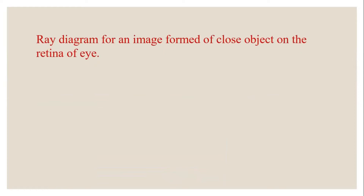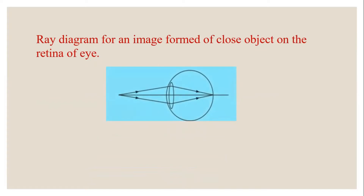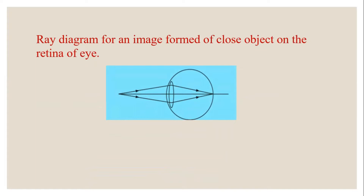Now we will see the ray diagram for an image formed of close objects on the retina of the eye. Normally, close objects are represented by a point, so the light rays coming from the point form a divergent light beam and they get focused onto the retina of the eye.